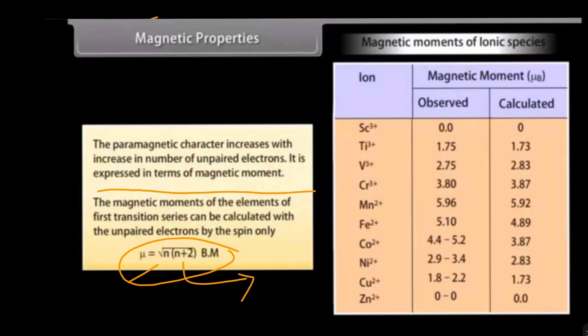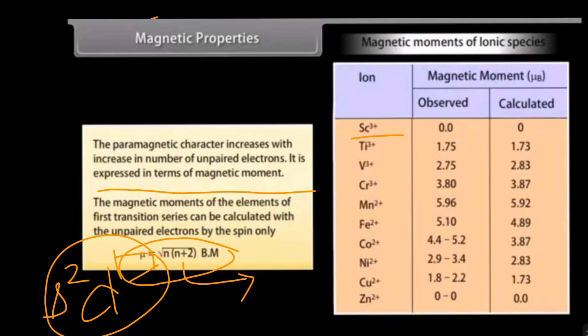Magnetic moment (ν) is expressed using the formula: ν = √(n(n+2)) Bohr magnetons, where n is the number of unpaired electrons. For example, for Sc³⁺, the configuration is 3d⁰ — it donates 3 electrons leaving no unpaired electrons — so the magnetic moment will be 0. The magnetic moments of the elements of the first transition series can be calculated using this spin-only formula.